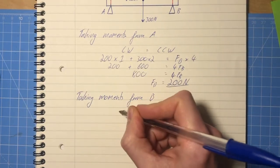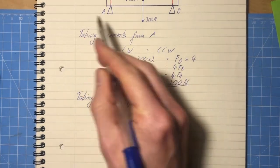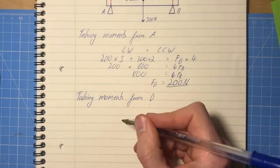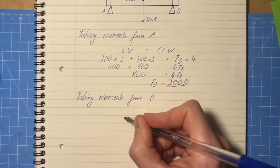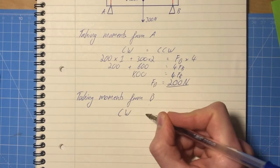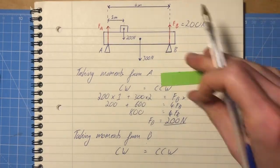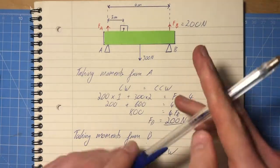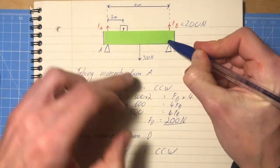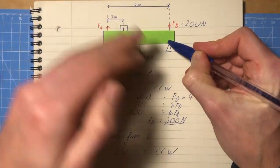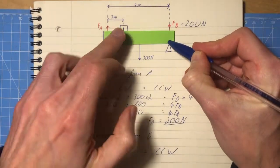And as before, the principle of moments says that if it's in equilibrium, and it is in all these questions that we do, we're always in equilibrium, clockwise moments are equal to the counter-clockwise moments. So let's look at what we have here. If B is our pivot, which of these forces are causing clockwise and which ones are causing anti-clockwise?